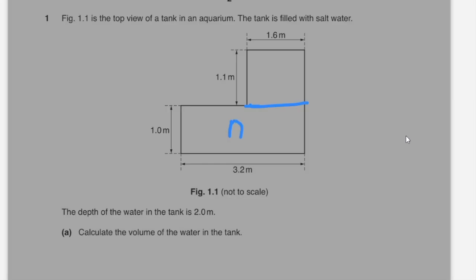So I have rectangle a and rectangle b. I'll calculate the volume of the tanks by first multiplying 1 with 3.2 into the height which is 2, and then I'll add the volume of the second rectangle which is 1.1 into 1.6 into 2. That gives the answer of volume as 9.9 meters cube.